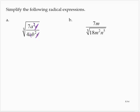So I'll rewrite this as the cube root of 7a over 4b squared. Now I'll break it up. Cube root of 7a over the cube root of 4b squared.